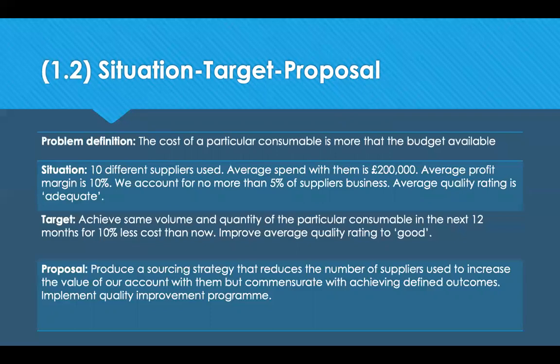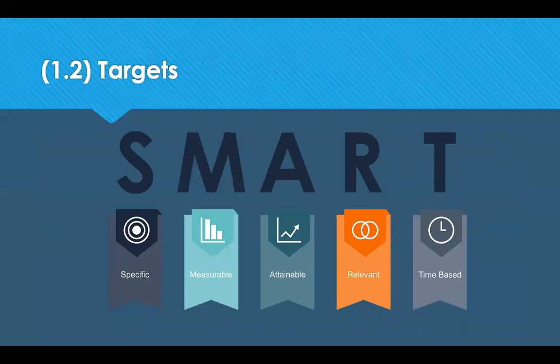When setting targets, they must be SMART — Specific (make the objective specific, explain exactly what you want to achieve and how), Measurable (ensure there is a way to check you've done what you set out to do), Achievable (objectives can be challenging but the outcome must be possible), Relevant (the objective must tie in with the goals of the organisation), and Time-bound (set deadlines to work towards to complete the activity as planned).